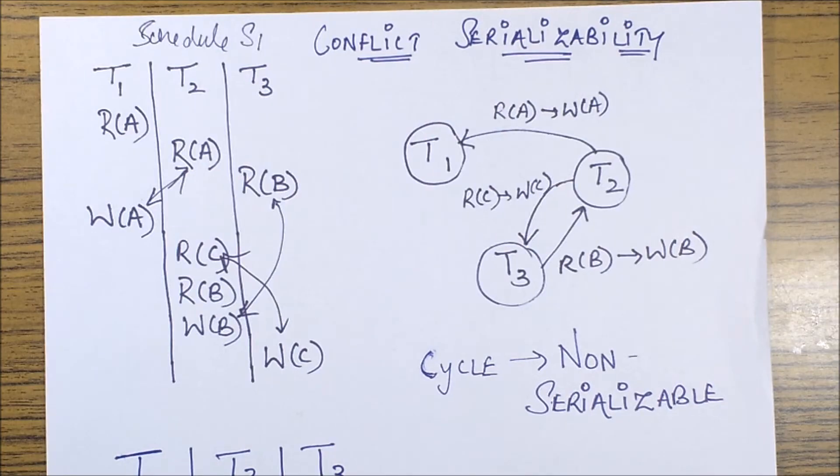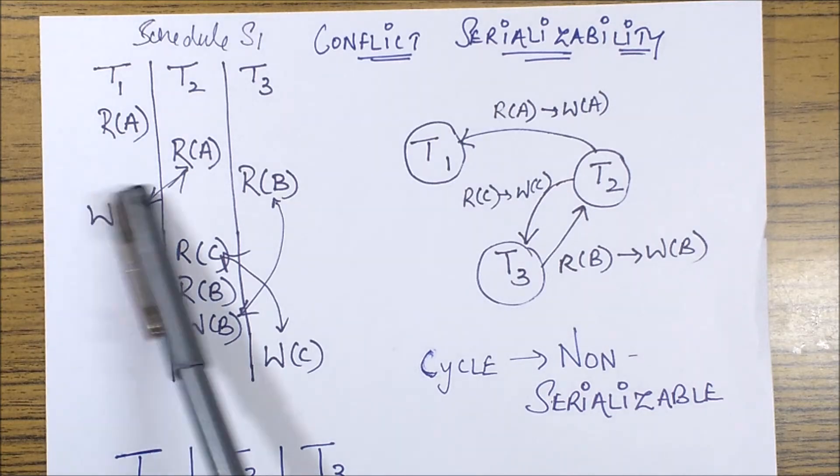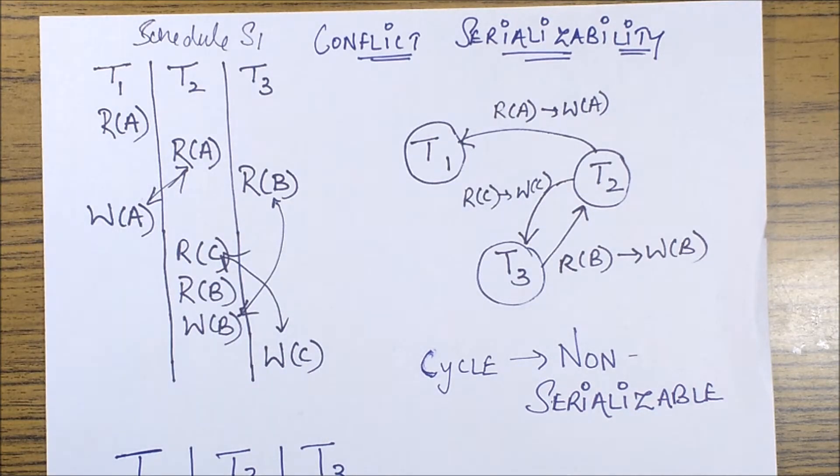Now just imagine if I would have tried directly the view serializability over here the things would have been very complex because I would have to plot first of all the three types of operations which is initial read, update and final update and then analyze the three sequences corresponding to the three data items ABC. We'll also take up that problem in the next video. But for now I would suggest that whenever you get some question to check for serializability first of all just try with the precedence graph method and then move on to view serializability. We already know that view serializability should only be checked if the test of conflict serializability fails. If a schedule comes out to be serializable with conflict serializable method that means it is serializable and it will be serializable by view serializability method also.